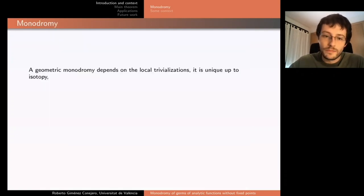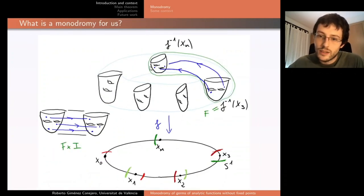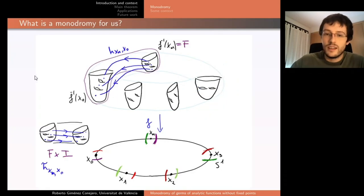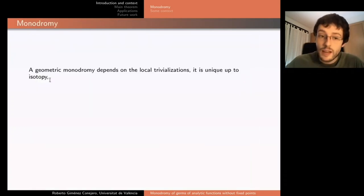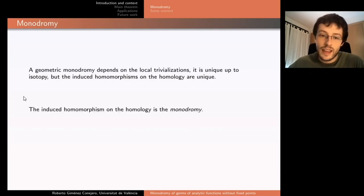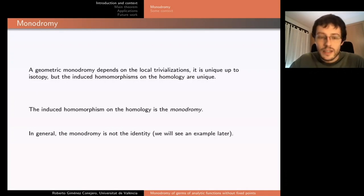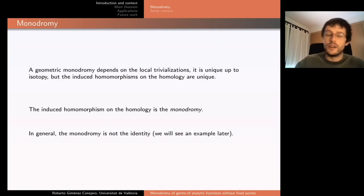A geometric monodromy depends on the local trivialization, but it is unique up to isotopy, and the induced homomorphism on the homology is unique. So the induced homomorphism on the homology is the monodromy. In general, the monodromy is not the identity — we will see an example later — and it is an interesting object to study.